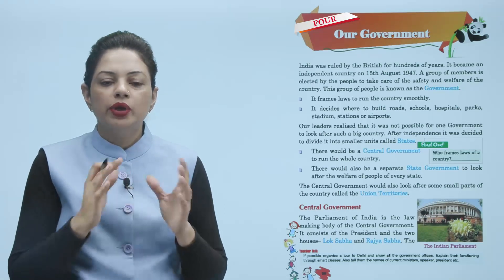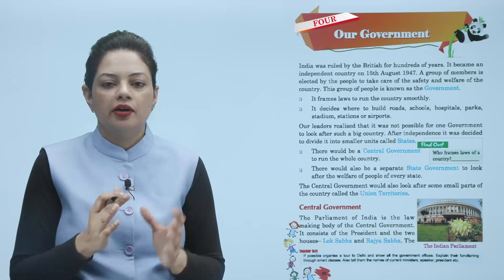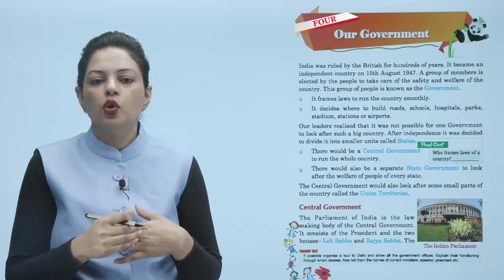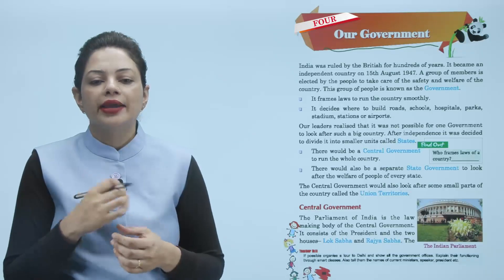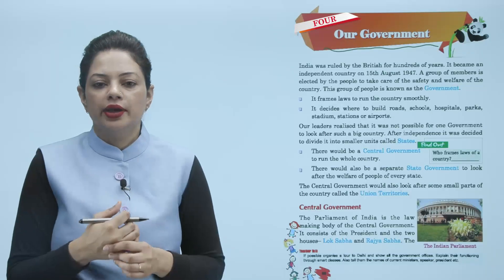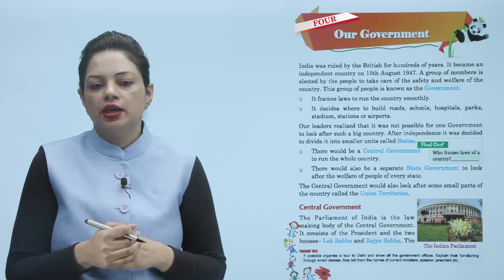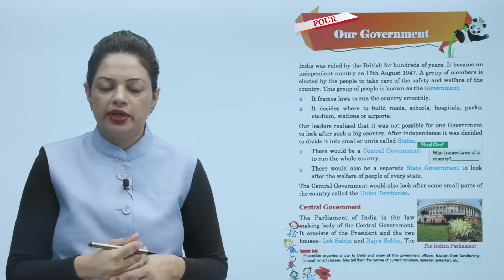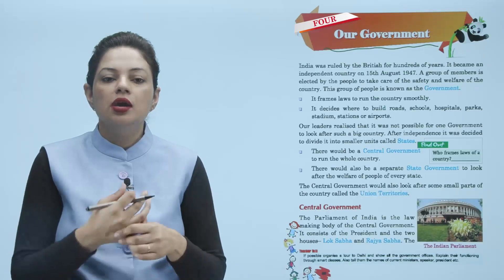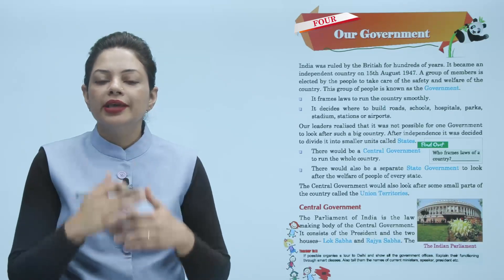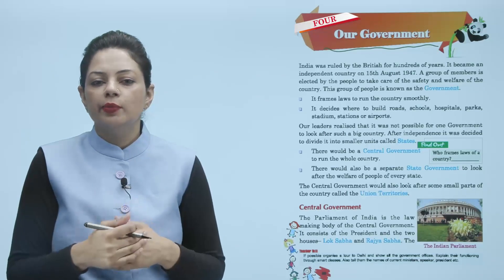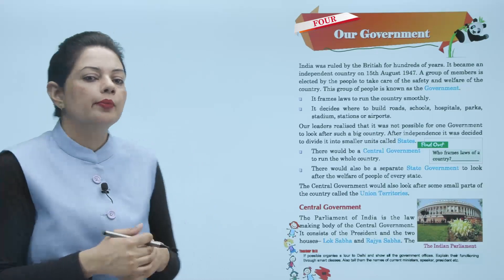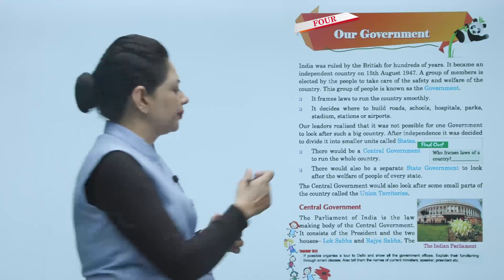Central government पूरी country के अलावा कुछ छोटे-छोटे parts, जिनको union territory बोला गया है, उनका भी look after करती है, उनके लिए भी rule और regulation बनाती है। तो हम detail में इनके बारे में बात करेंगे — first हम बात करते हैं central government के बारे में।